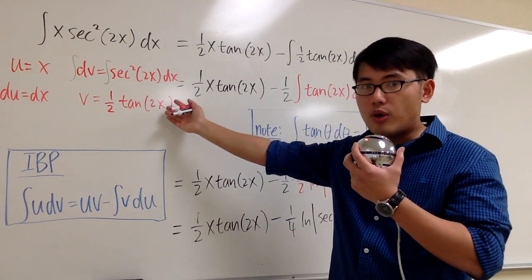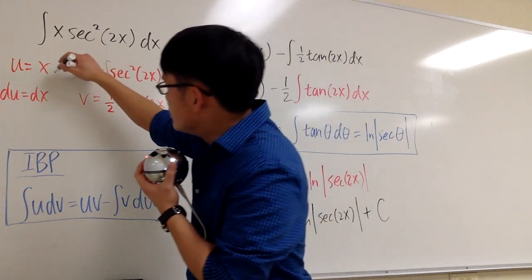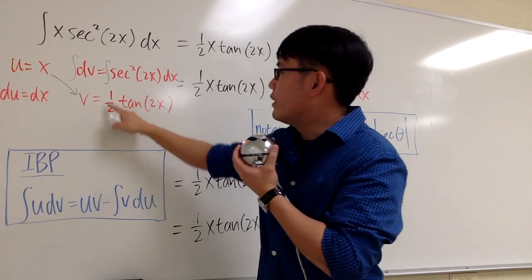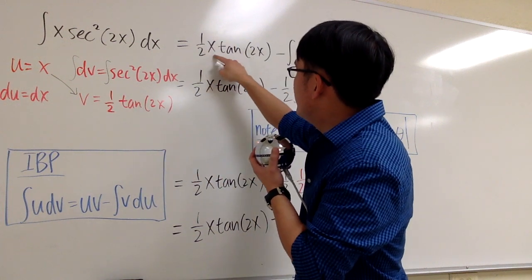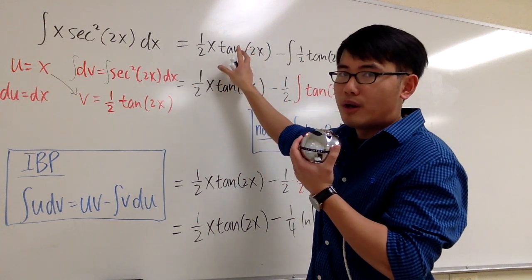So we have that. And we are ready to go. These are the ingredients to do integration by parts. So we will proceed. We multiply the u and v together. x times 1 half tangent of 2x. And we just put this down as 1 half x tangent of 2x. And this is going to be a part of the answer.